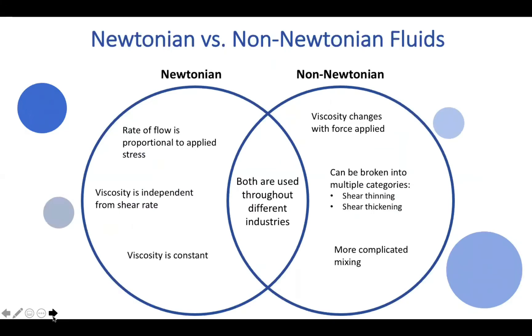There are observable key differences between Newtonian and non-Newtonian fluids. A significant distinction is their two separate behaviors. Newtonian fluids have a rate of flow that's proportional to the applied stress. They also have a viscosity independent from shear rate and velocity that remains constant. Non-Newtonian fluids have a viscosity that changes with the force applied and can be broken into multiple categories such as shear thinning and shear thickening fluids.